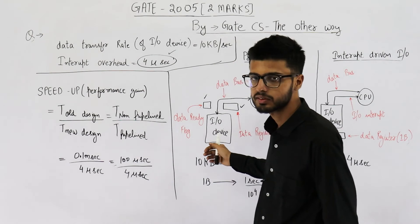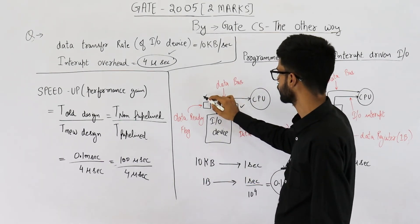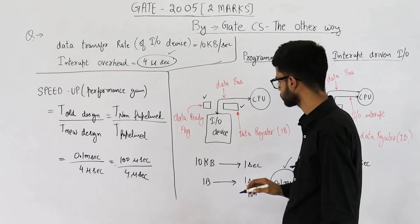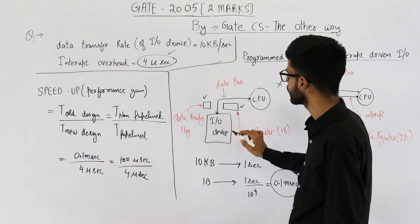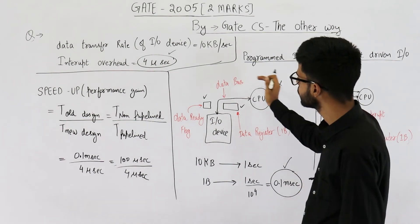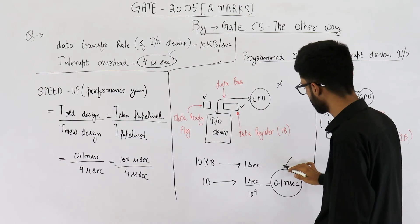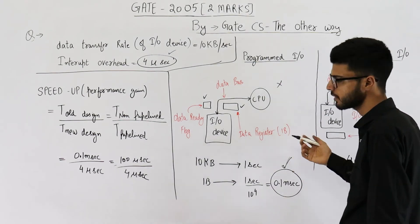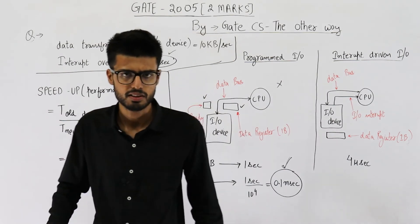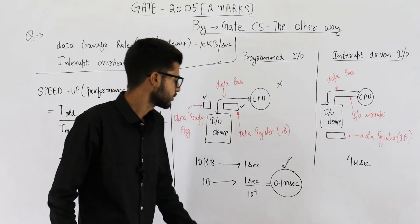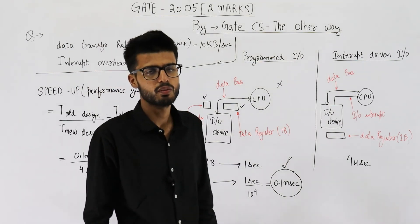To recapitulate: in programmed I/O, the CPU is not doing any useful work — it continuously checks the register for the entire time the I/O device takes to prepare a byte, wasting that entire 0.1 milliseconds. In interrupt-driven I/O, only 4 microseconds are spent on the interrupt overhead. Dividing these gives the performance gain of 25. Thank you very much.